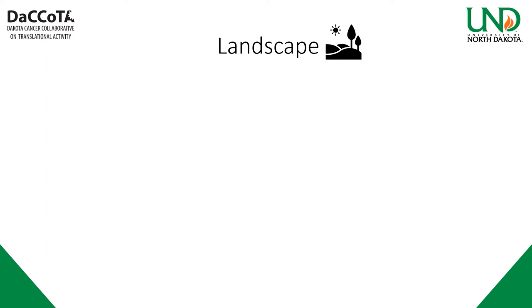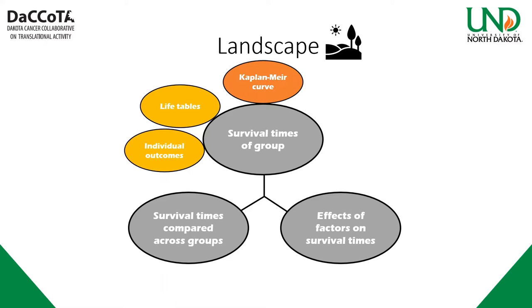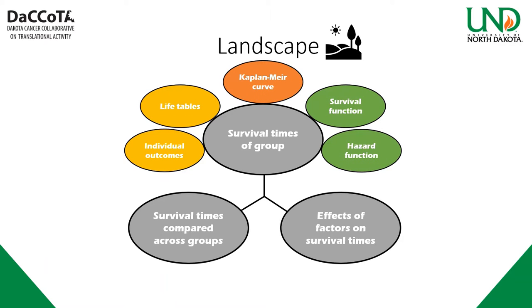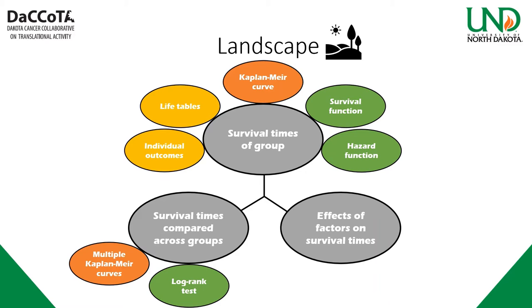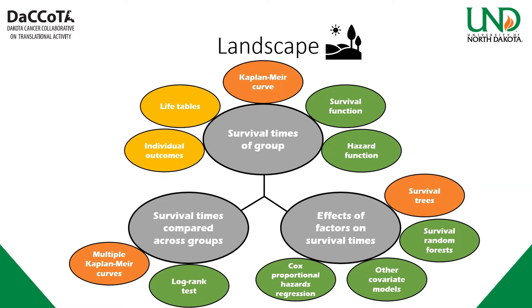Here is our landscape of what we'll be covering in modules two and three. The core concepts are survival time of a group, across groups, and effect of factors. For survival time of a group: individual outcomes, life tables, Kaplan-Meier curve, survival function, and hazard function. Across groups: multiple Kaplan-Meier curves and the log rank test. For factors: survival trees, random forests, other covariate models, and Cox proportional hazards regression, colloquially known as Cox regression.